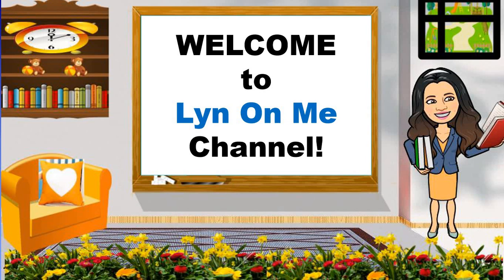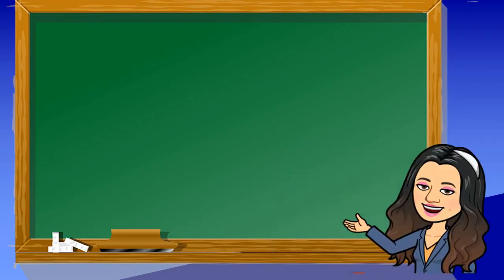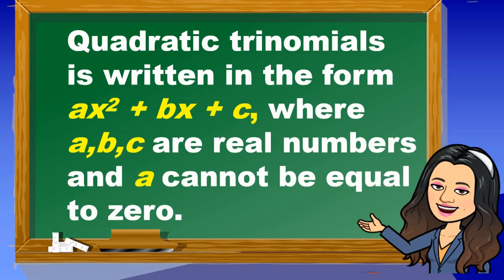Hello everyone, welcome again to my channel. This time we're going to take up factoring quadratic trinomials. Quadratic trinomials are written in the form ax squared plus bx plus c, where a, b, c are real numbers and a cannot be equal to 0.